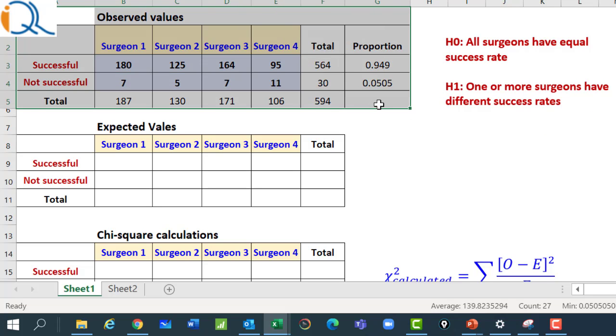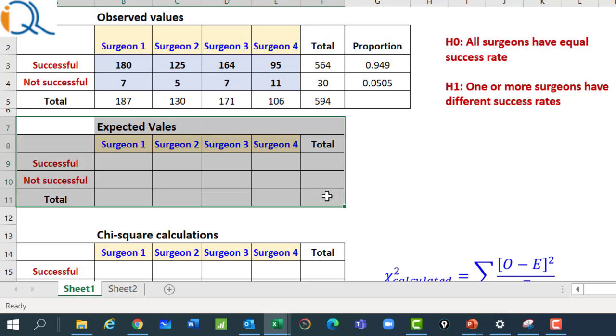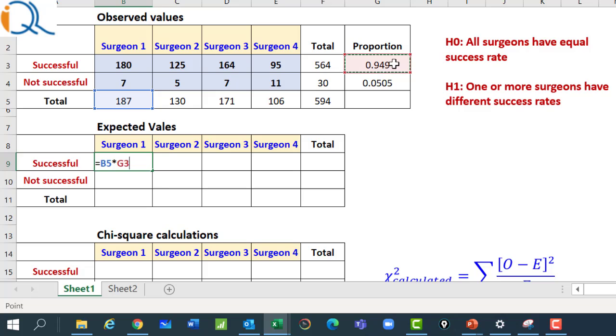So, this table shows the observed values. Now, we calculate the expected values under null hypothesis. This is quite simple. For surgeon 1, the proportion of successful operations, like other surgeons, it would be 0.949. And the total number of operations done by surgeon 1 is 187. So, if I multiply 187 by 0.949, I would get expected number of successful operations by surgeon 1. So, I just write down equal to 187 star 0.949. Expected number of successful operations is 177.56 while as observed are 180.